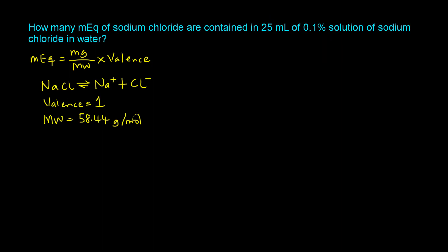To do that, we make use of the 0.1% and the volume of the preparation. So what that would look like is you have 0.1%, which implies that you have 0.1 grams of sodium chloride in 100 milliliters of solution.